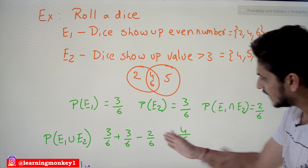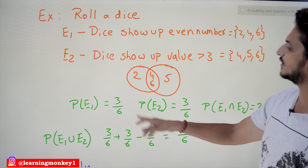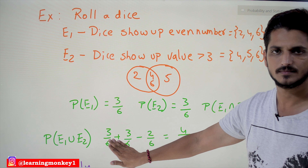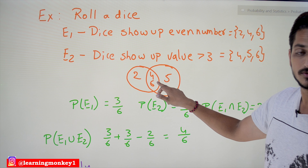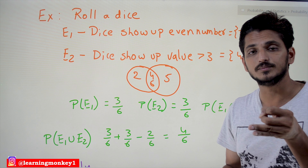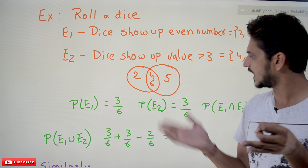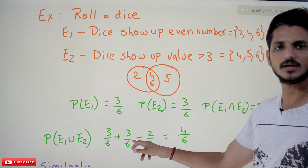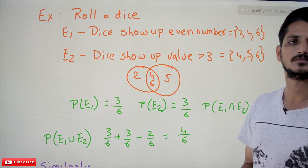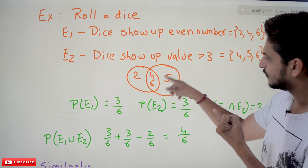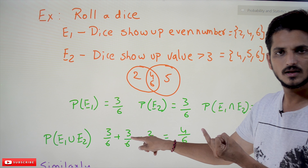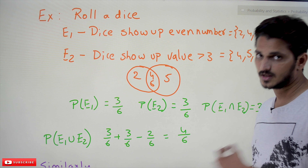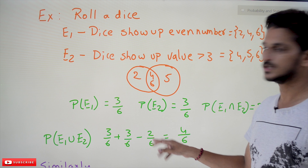Why did we subtract 2/6? Because 3/6 for E1 already includes 4 and 6, and 3/6 for E2 also includes 4 and 6 — so 4 and 6 are counted twice. Since 4 and 6 are intersection elements, both events occur when these values appear, meaning two elements are involved two times. Therefore we subtract them once, which is 2/6 — that is why we subtract P(E1 ∩ E2).